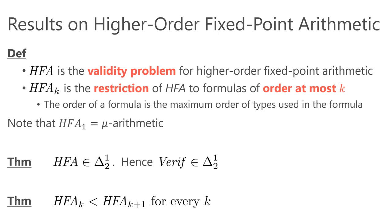Our paper gives two results. First, HFA is Δ¹₂. Therefore, the branching time temporal verification problem, which is equivalent to HFA₁, also belongs to Δ¹₂. This result may be surprising: despite the higher-order nature of the logic, its validity problem is reducible to a special form of second-order arithmetic formula. Second, HFA_k is strictly easier than HFA_{k+1}. The reviewers say this is the most interesting result of the paper, so I'd like to give a sketch of the proof.